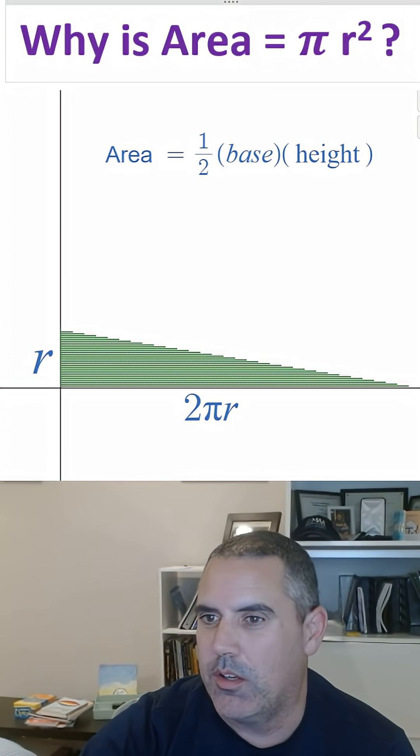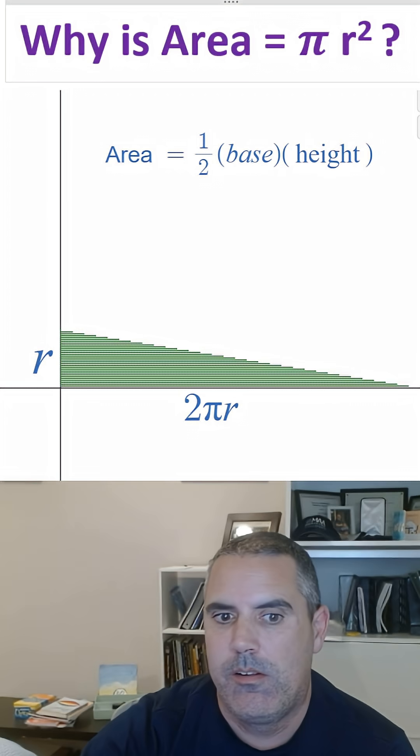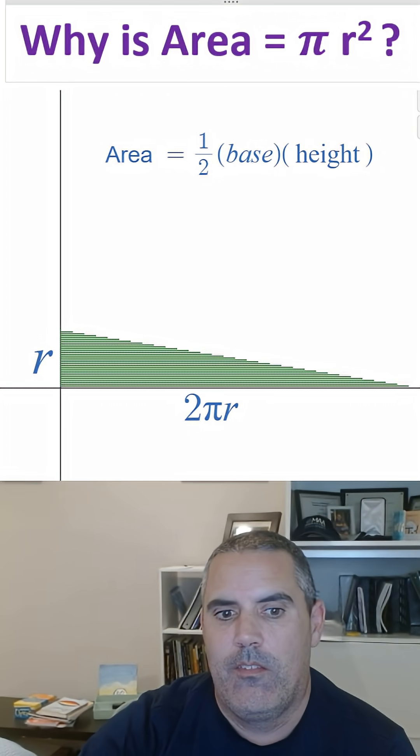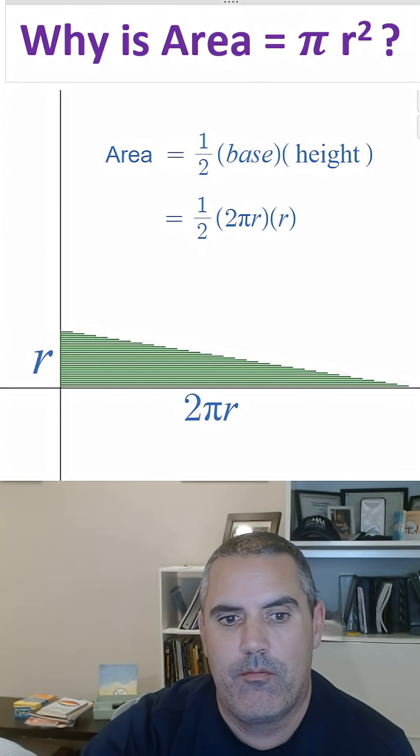But the base is 2 pi r. The height is r. Cancel the one half and you're done.